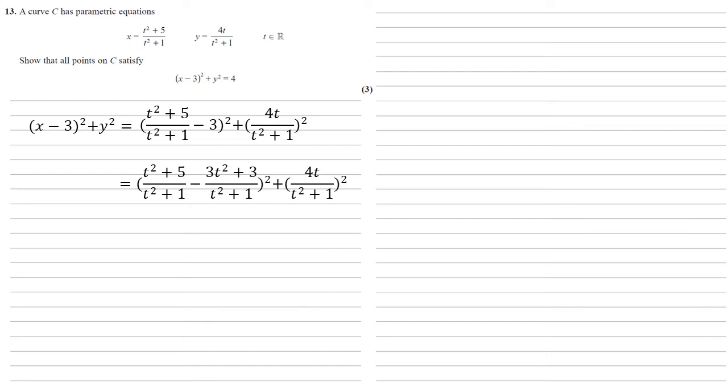We can now take that 3t squared plus 3 away from the t squared plus 5 to bring the two fractions together. So we've now got minus 2t squared plus 2 over t squared plus 1 all squared, plus 4t over t squared plus 1 squared.